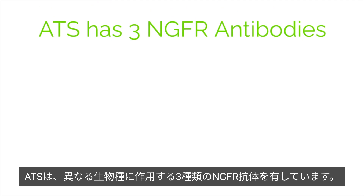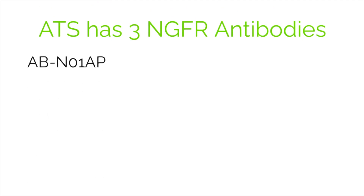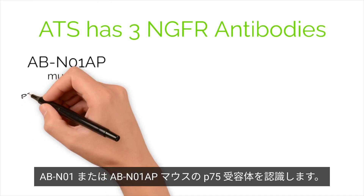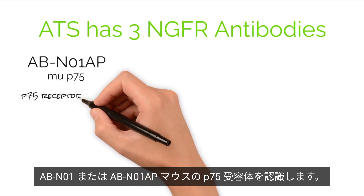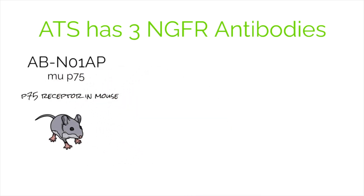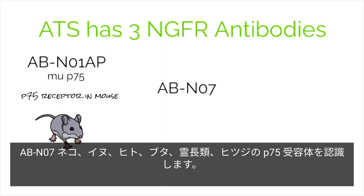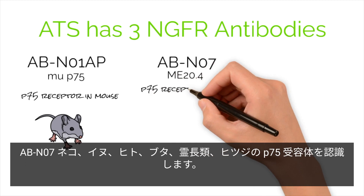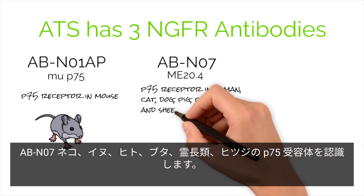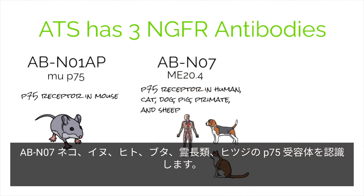ATS has three NGFR antibodies that work in different species. ABN01, also known as MU-P75, and the affinity purified version ABN01AP, recognize the P75 receptor in mouse. ABN07, also known as ME20.4, recognizes the P75 receptor in human, cat, dog, pig, primate, and sheep.